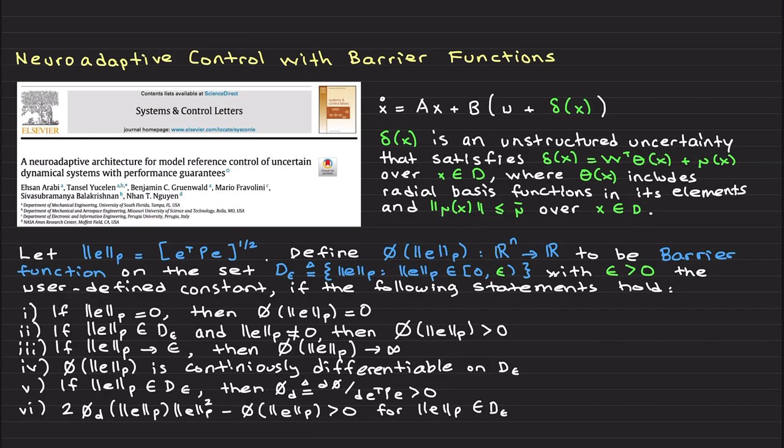Since we would like to also constrain error, x minus xr, let's introduce the Lyapunov barrier function, which is almost the same Lyapunov function with one additional condition. So p-norm of the error is defined like this. We say phi is the barrier function on the set with epsilon changing from zero to epsilon, with epsilon being a user-defined constant when these six conditions hold. The first condition is, actually, the first five conditions are similar to the conditions of the previous video. If p-norm of the error is zero, it is zero.